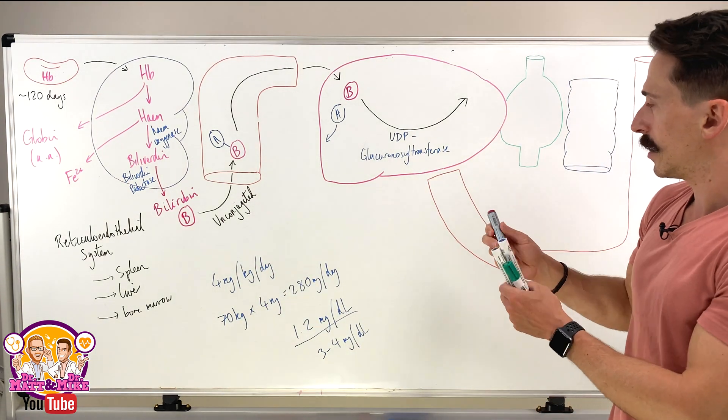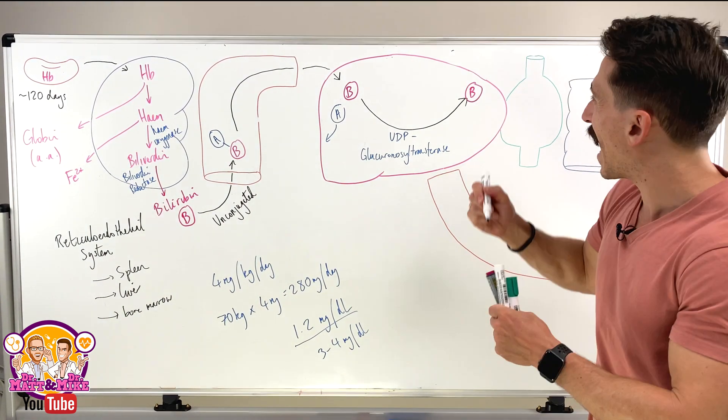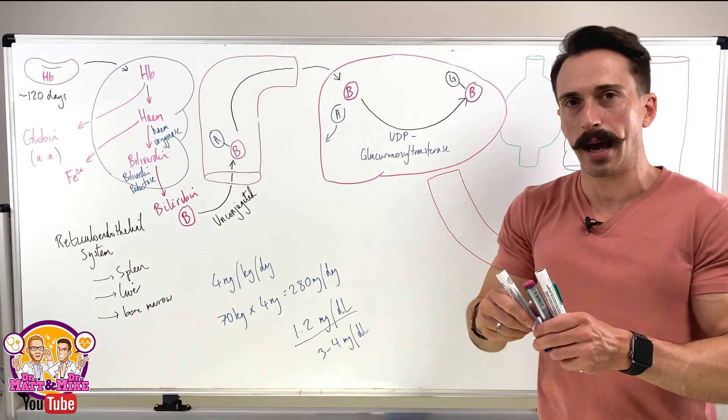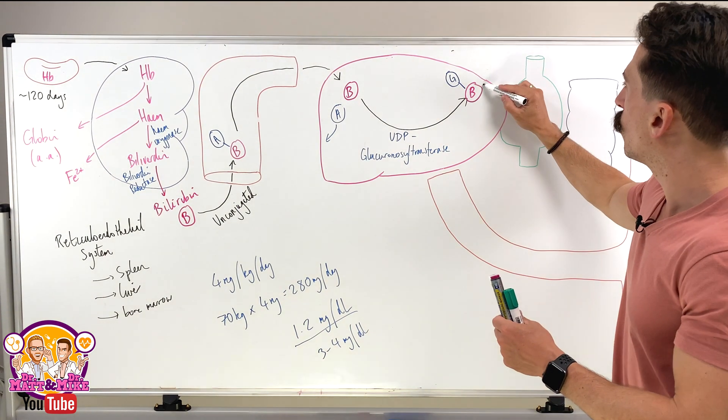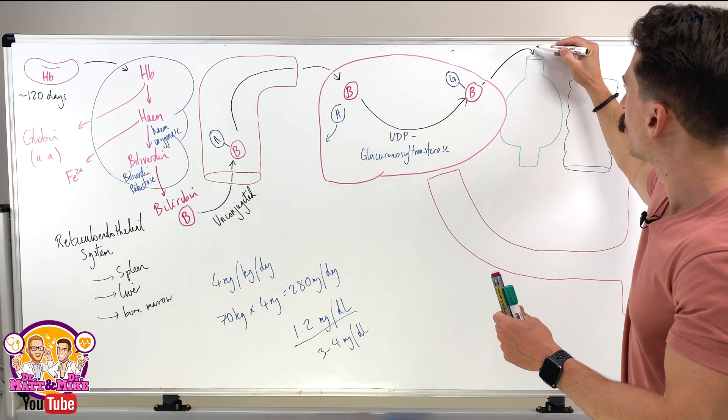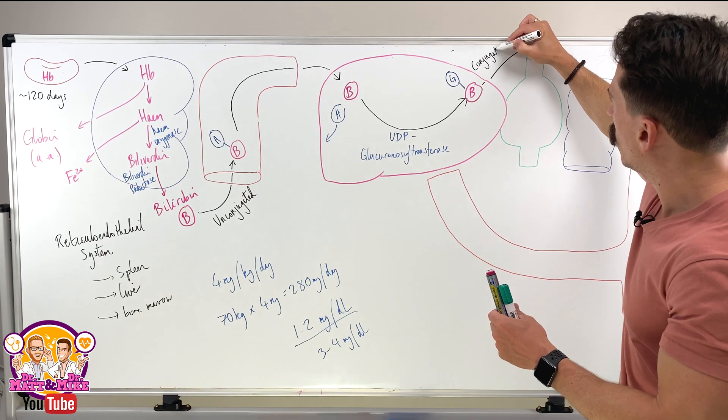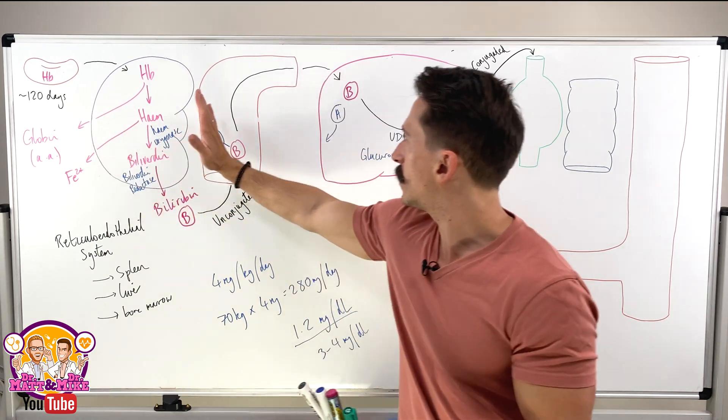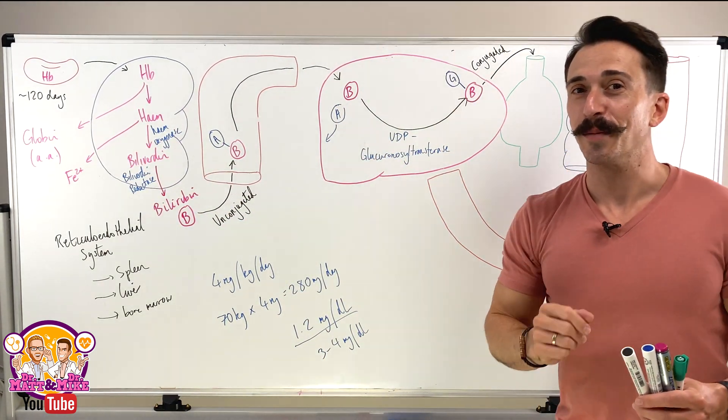So we take this bilirubin and now we can click some glucuronic acid to it. So it's a G now instead of an A and now what we have is conjugated bilirubin. From here to here, unconjugated. From here to here, it's going to be conjugated.